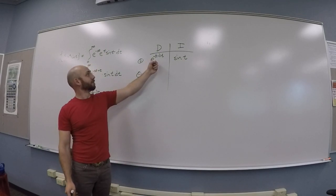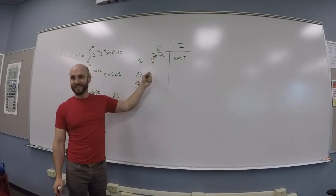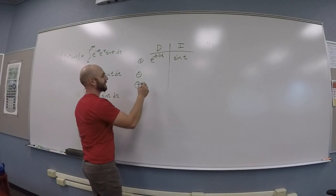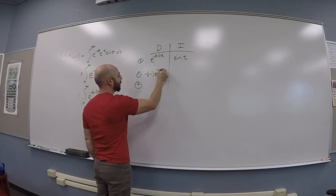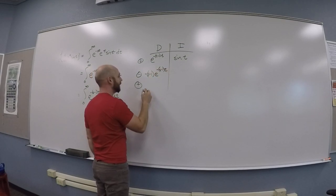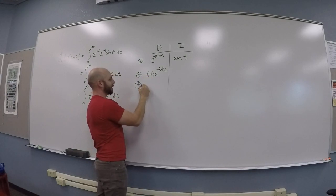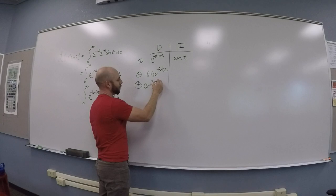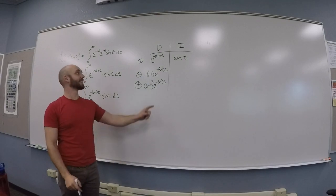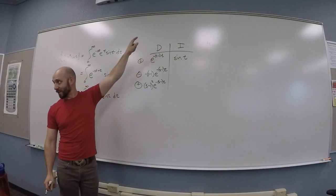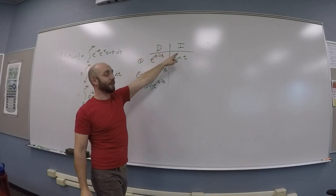So, then you do derivative of this is minus s minus one e to the minus s minus one t. And derivative, again, is s minus one squared e to the minus s minus one t. Does it not pop into the denominator? I'm differentiating. Oh. I'm in the differentiate column. In the integrate column. Okay.